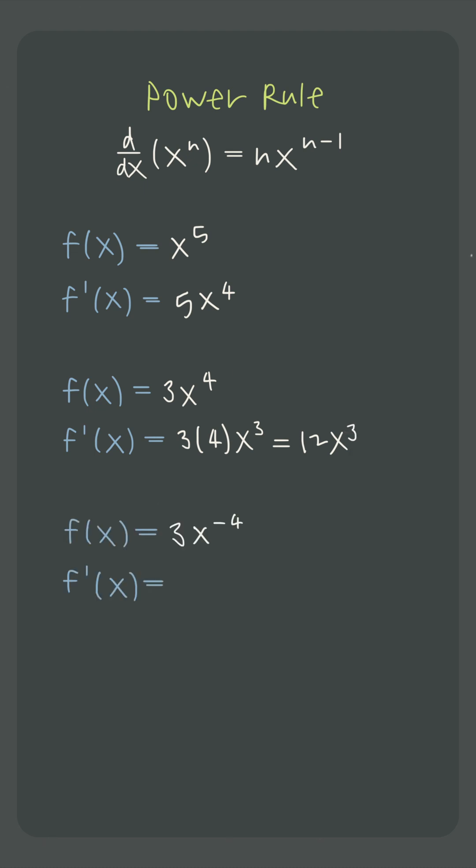And nothing changes if the exponent is a negative number. The exponent comes down in front to multiply the existing coefficient, and we subtract one from the exponent.